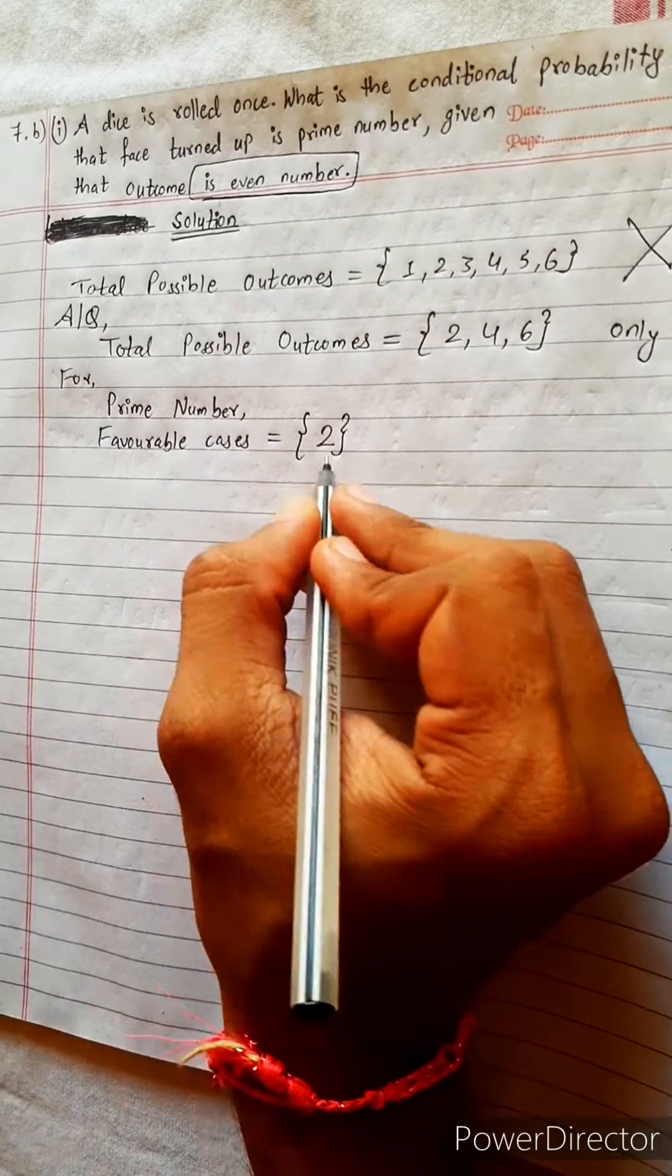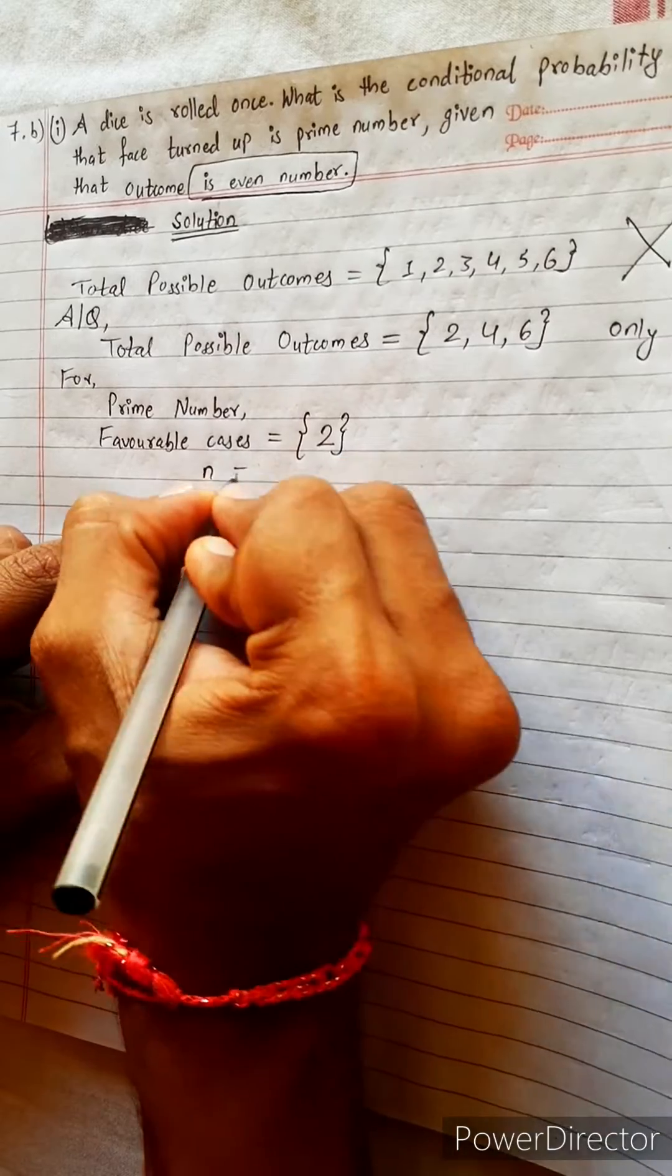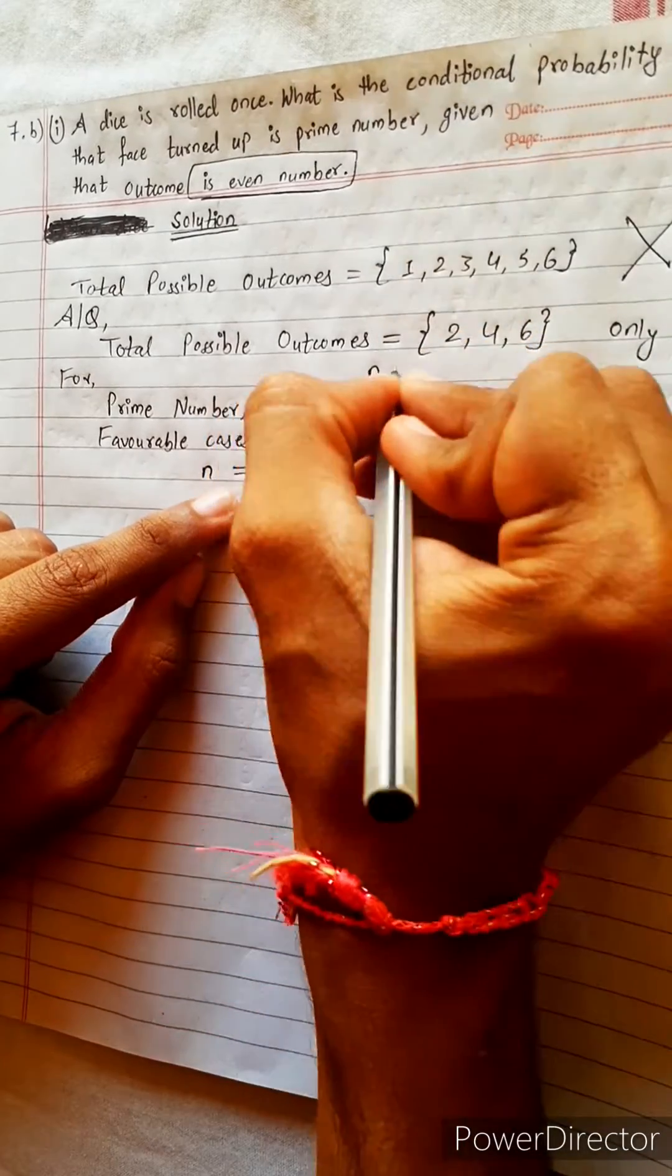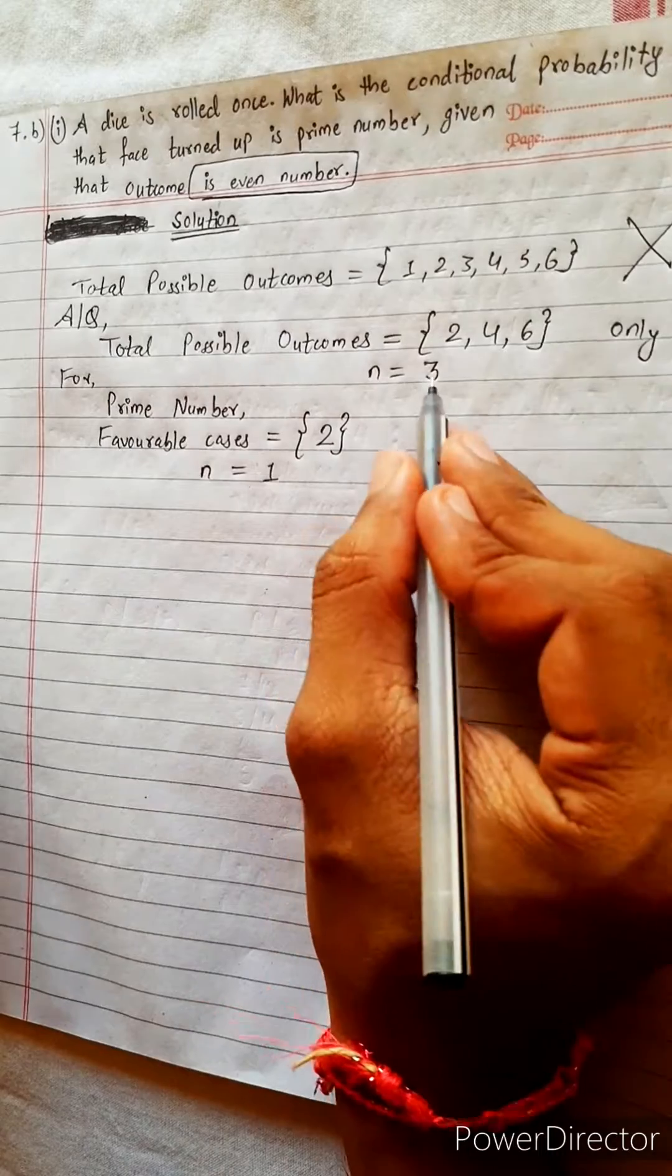Only 1, so this is the cardinality, how many elements are here. 1 element here. Here are 3 elements. Is this clear? Yes.